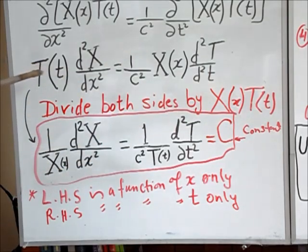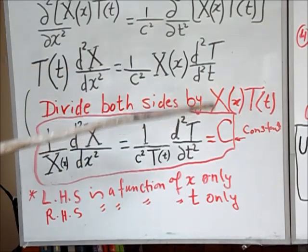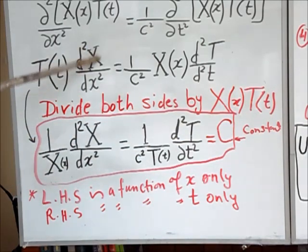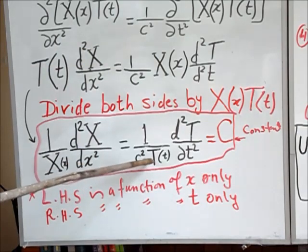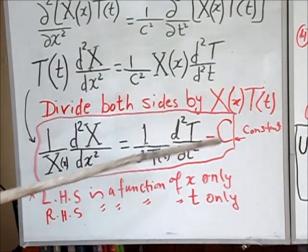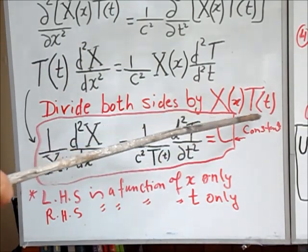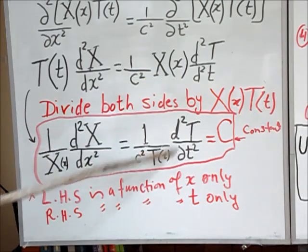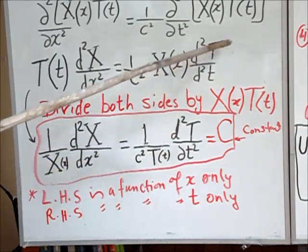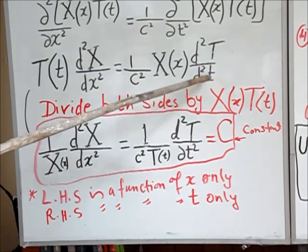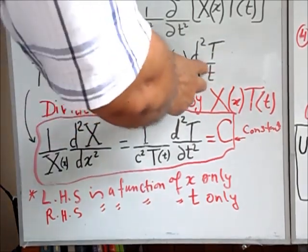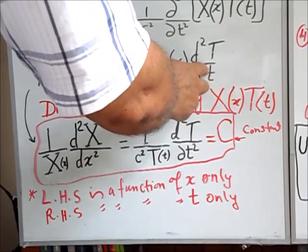After dividing by XT, the T's cancel on the left side and we are left with (1/X)(d²X/dx²). On the right side, X cancels and we are left with (1/c²T)(d²T/dt²). So we have successfully separated the variables.